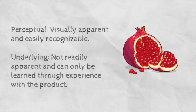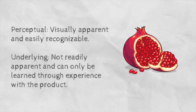Perceptual attributes are visually apparent and easily recognizable. Underlying attributes are not readily apparent and can only be learned through experience with the product. For example, the perceptual attribute of a pomegranate would be that it is round and red, while the underlying attribute would be that it is full of seeds.